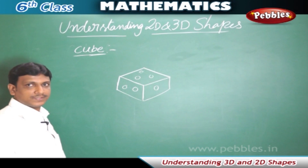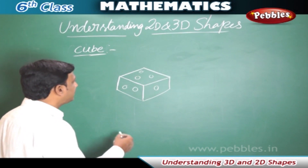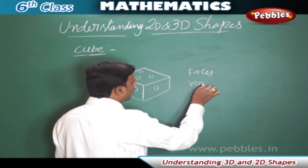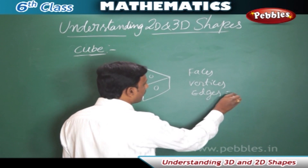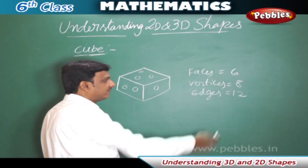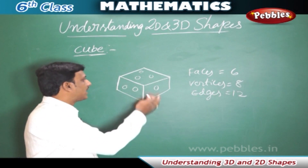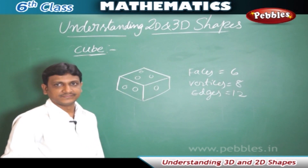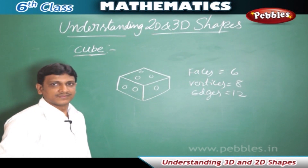Now let us learn about another 3D shape: the cube. A dice is in the shape of a cube. The cube is also a 3D shape and has the same number of faces, vertices, and edges as a cuboid: 12 edges, 8 vertices, and 6 faces. Both the cube and the cuboid have the same count for faces, vertices, and edges.